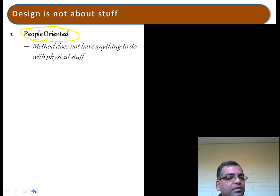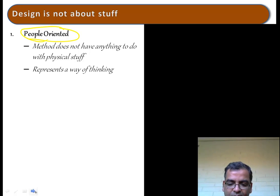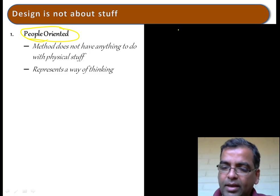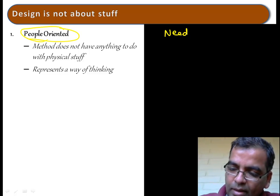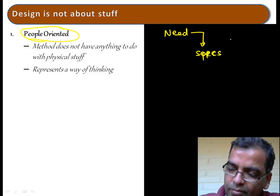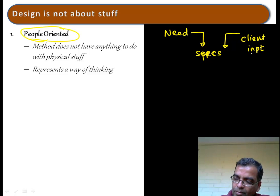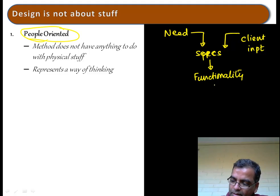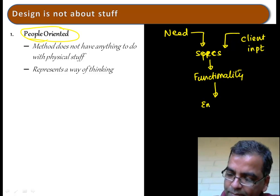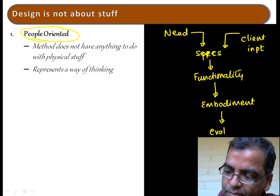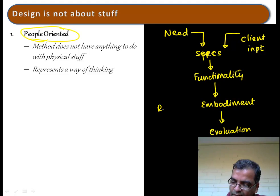The method is not specific to any physical thing; you can apply it to all kinds of things. You start out with a need statement, a need analysis that leads to development of specifications using client input. From that you develop functionality, which gives rise to embodiment, then you have evaluation, then redesign.